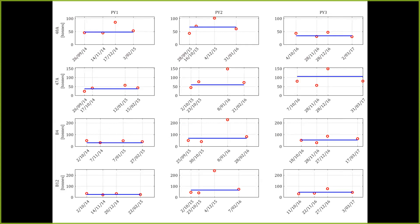We put that overestimation down to the fact that the estimate at pea-sized and pre-veraison stages is based around berry counting, and the selection of bunches for berry counting is very critical. We believe that introduces substantial bias — up to 100% and more error. This is what you get from state-of-the-art manual yield estimation.